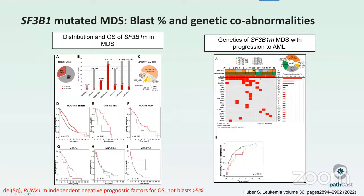A nice study by the German group published in Leukemia in 2022 looked at SF3B1 mutated MDS and found that blast percentage and genetic co-abnormalities are the main determinants of outcome. Deletion 5Q and RUNX1 are independently prognostic — that's the reason the ICC excludes RUNX1 and both classifications exclude deletion 5Q from this category. But if you have a truly isolated SF3B1 mutation without other poor genetic prognosticators, having blasts more than 5% does not seem to be that important.